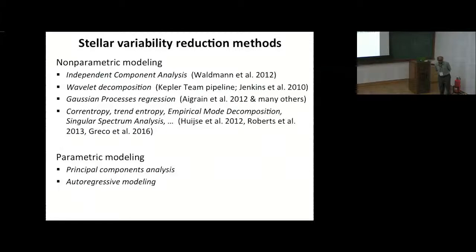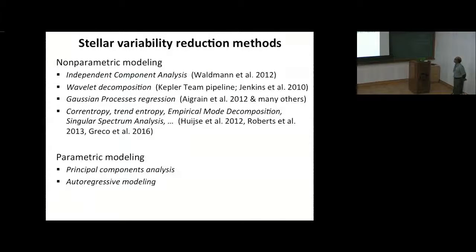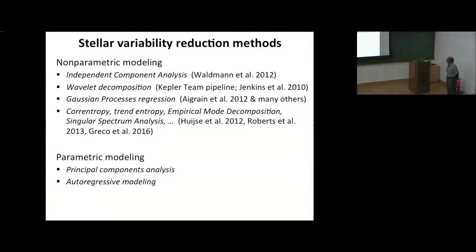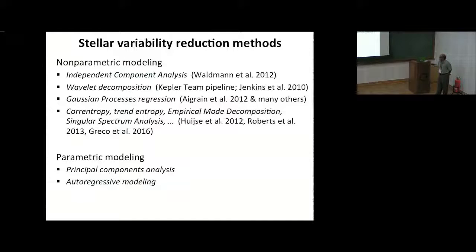Statistical techniques useful here include independent component analysis; wavelet decomposition used by the Kepler team pipeline at NASA Ames; Gaussian process regression by Suzanne Aigrain and colleagues; and trend filtering, empirical modeling by Roberts et al. Other possibilities include principal component analysis, autoregressive modeling, various types of ARMA modeling, and moving average modeling.